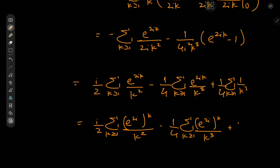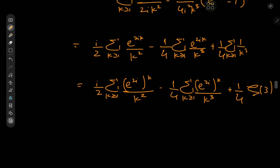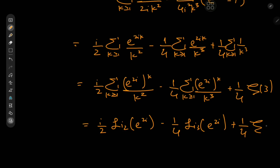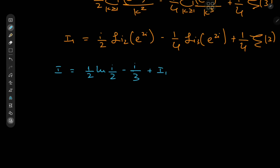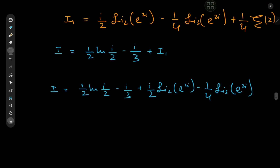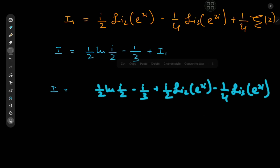We can write this as the sum (i/2)·Li₂(e^(2i)) — the dilogarithm — minus (1/4)·Li₃(e^(2i)) — the trilogarithm — plus (1/4)·ζ(3), where Li₂ and Li₃ are evaluated at z = e^(2i). So the full target integral I equals (1/2)·log(i/2) − i/3 + (i/2)·Li₂(e^(2i)) − (1/4)·Li₃(e^(2i)) + (1/4)·ζ(3).